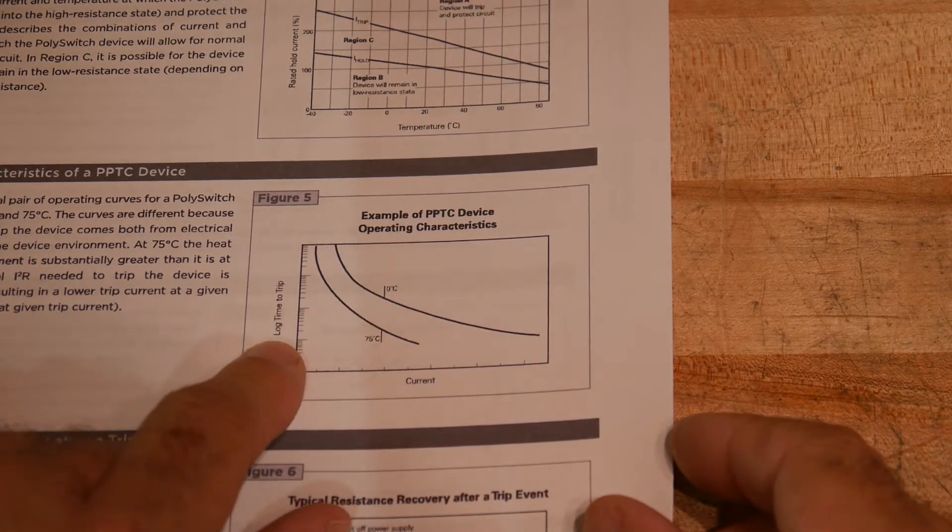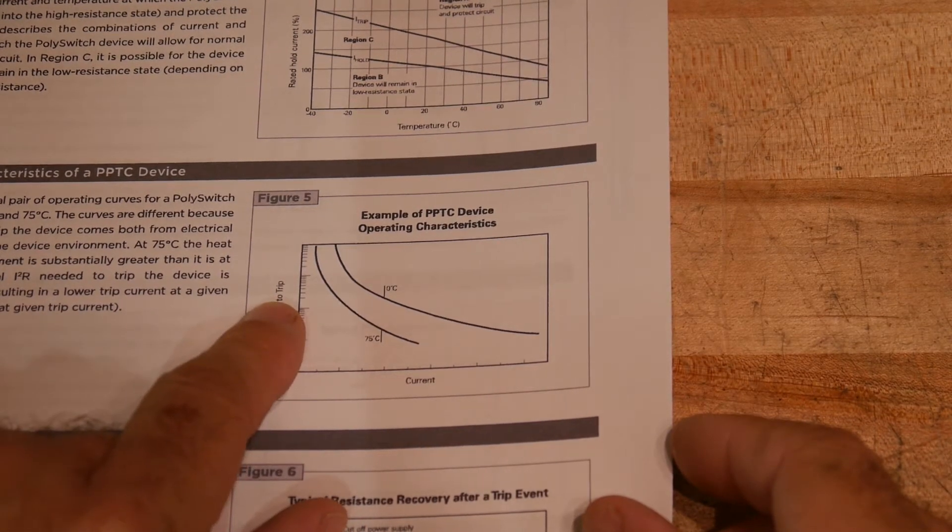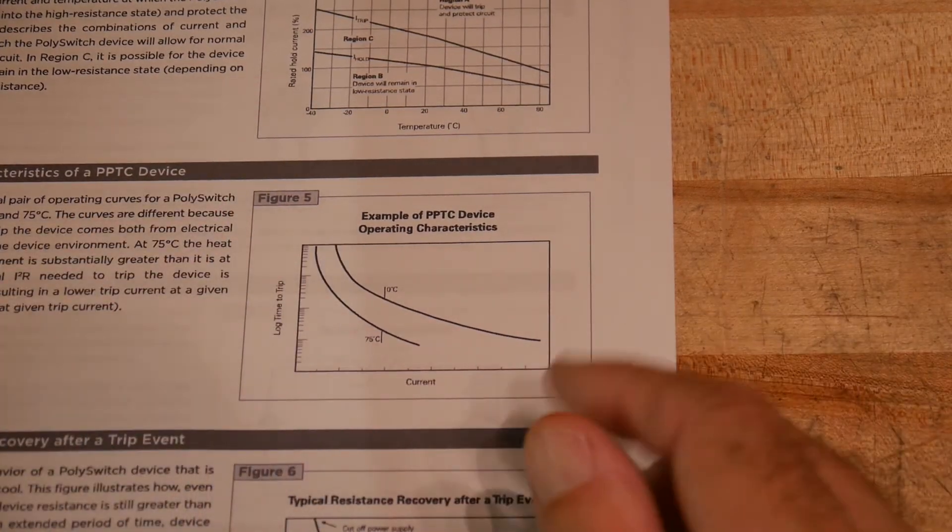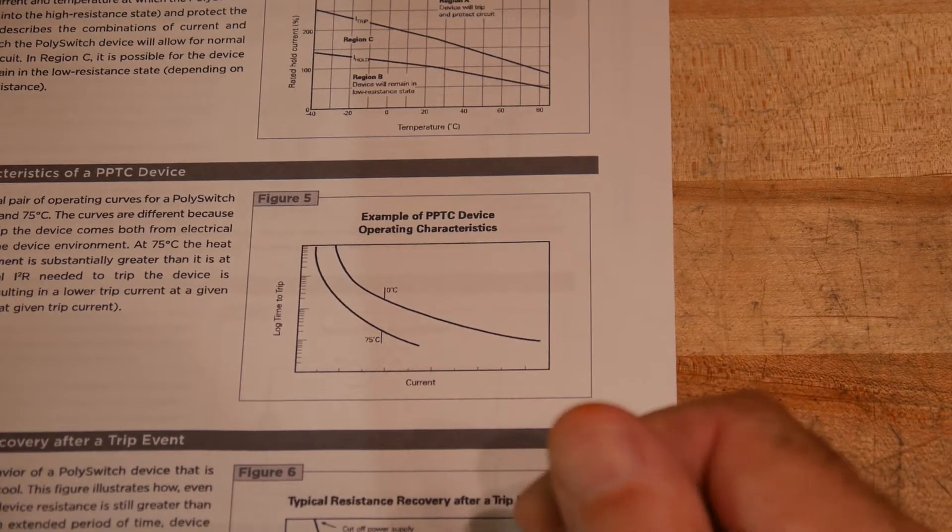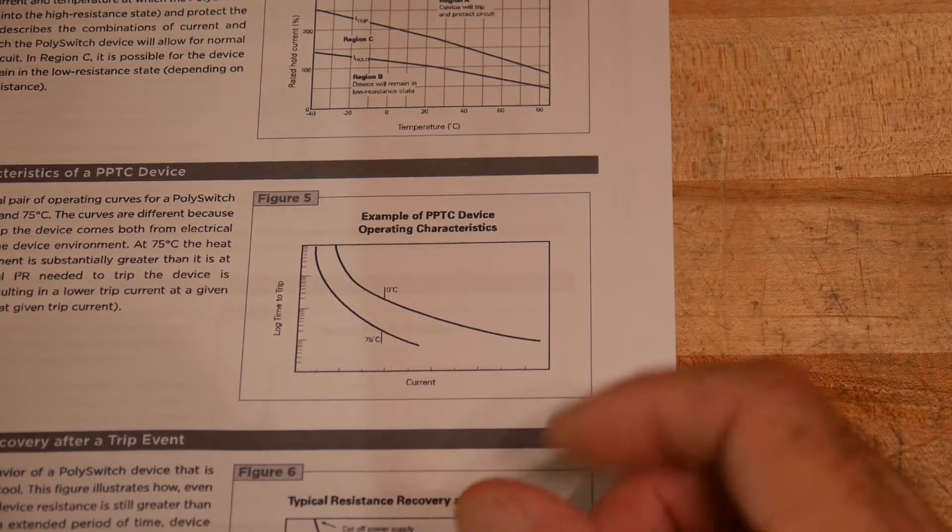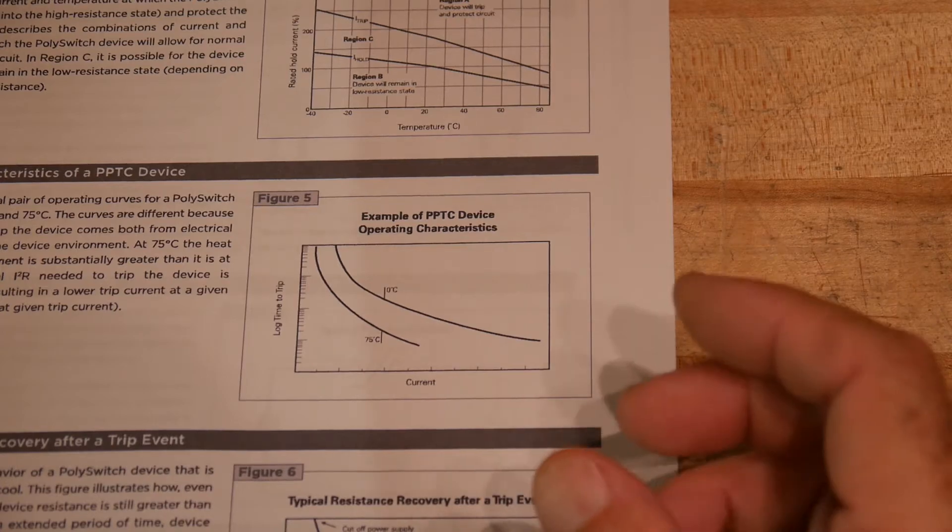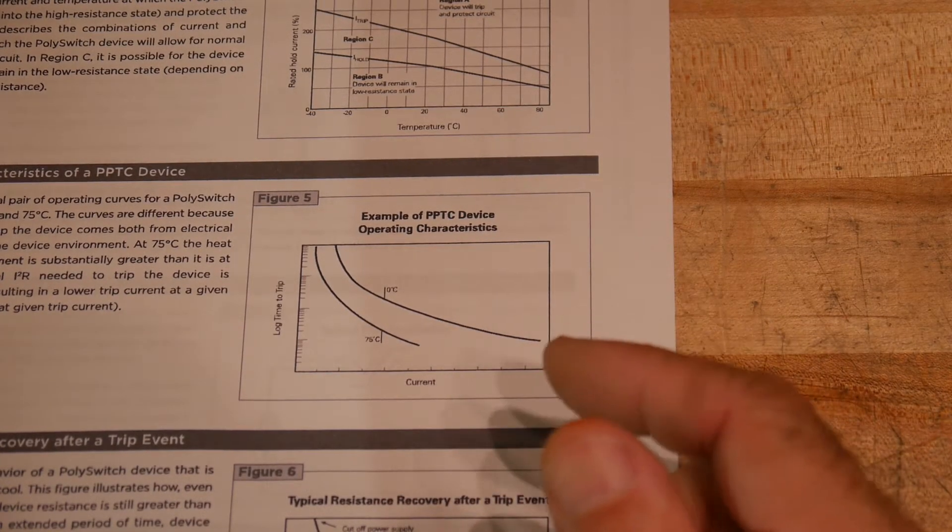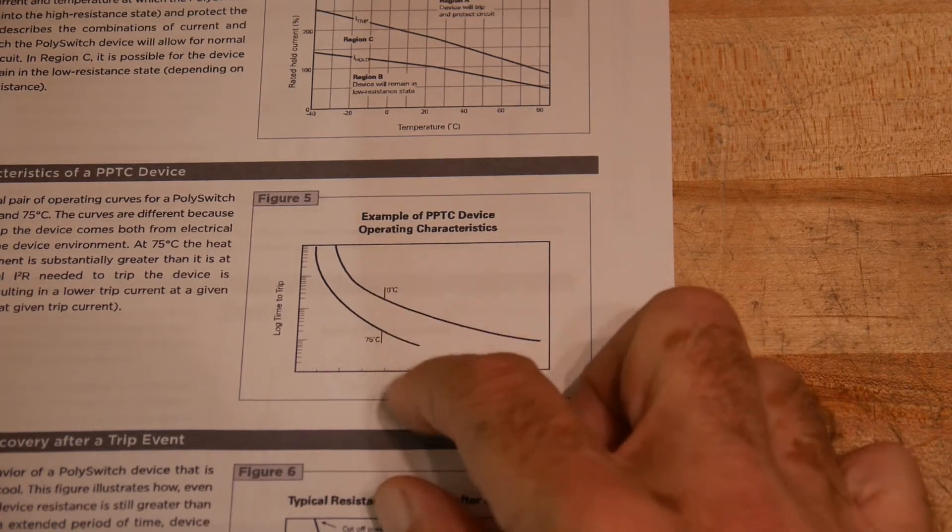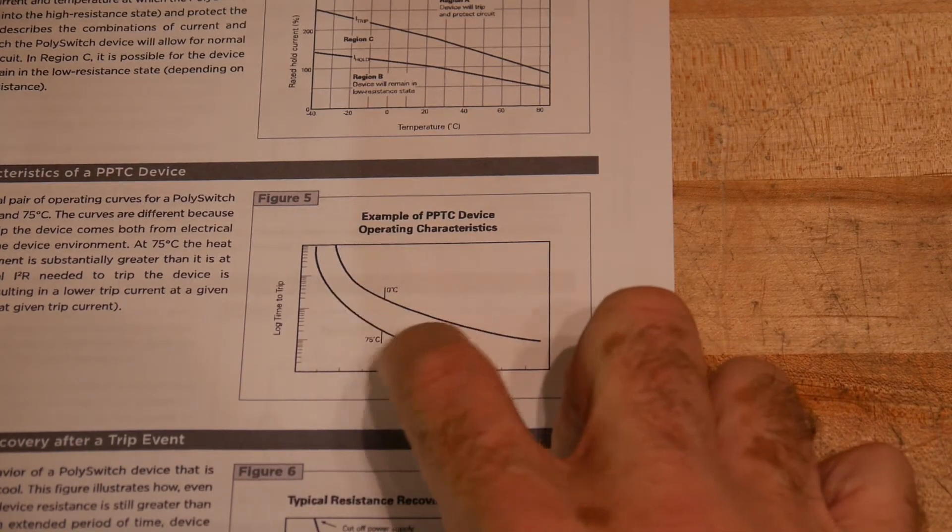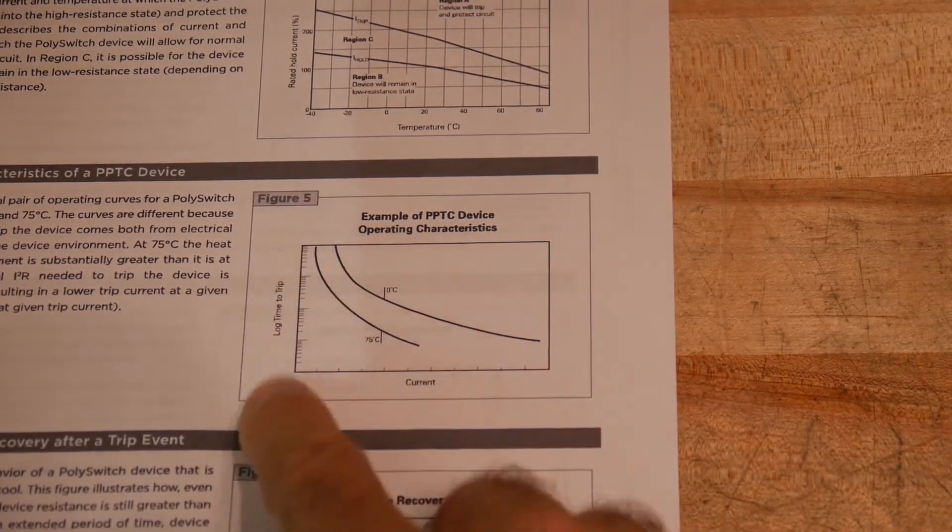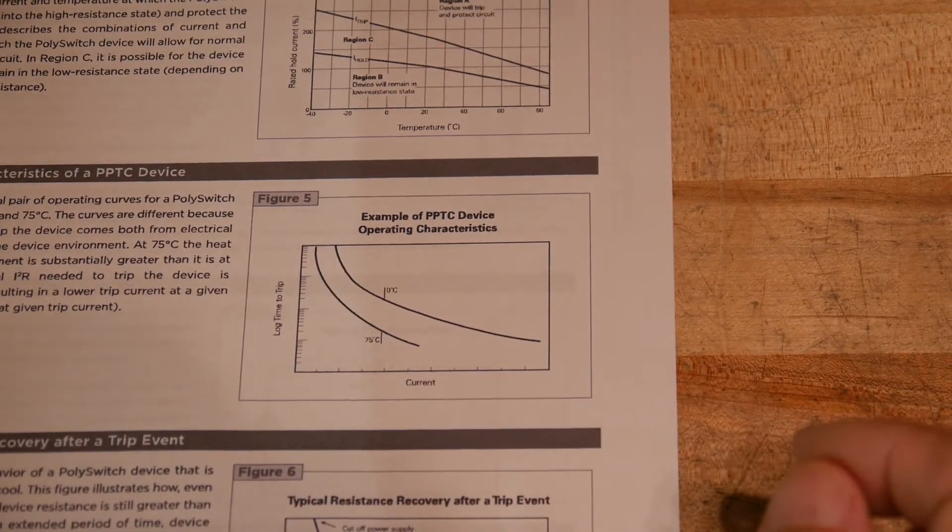Let's see. This is log time to trip. So this is the amount of time it takes to trip and the current. And we saw that when we were testing it, that when we were just a little bit over the trip point, it did take a long time for that power to build up, the energy to build up, and it finally tripped. Whereas if you were quite a ways over it, then the time was much quicker. So it turns out that it follows this graph. This is a log graph as well.